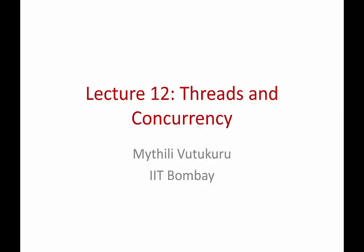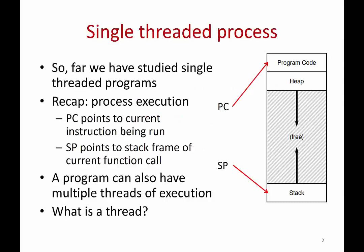In the next few lectures we are going to study the concept of threading and concurrency. Before we understand what threads are, let's review what we have seen so far. We have studied single-threaded programs. In a single-threaded program, there is one thread of execution. Here is your memory image — when this process is executing on the CPU, the program code, data, heap, and stack are all in memory. The CPU's program counter register points to some instruction in the program code, and the stack pointer register points to the current stack frame depending on where you are in your function calls. The CPU executes instruction by instruction as the PC moves forward. This is called a single-threaded program — just one flow of execution through the program code.